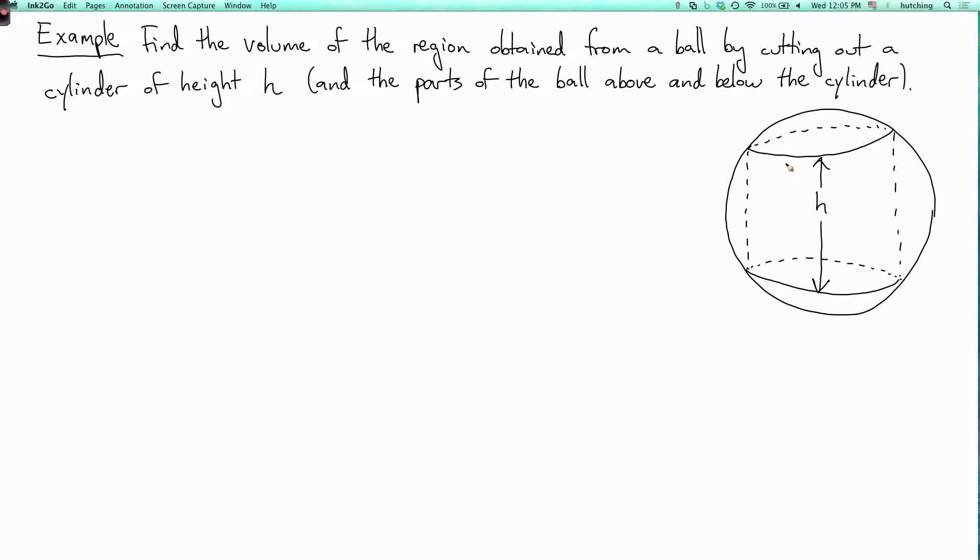Now, the statement of the problem might look a little funny because I've only given you the height h of the cylinder and I haven't given you the radius of the cylinder or the radius of the ball. So let's work out the problem and see what happens. We should at least give those numbers names. Let r1 be the radius of the cylinder and let r2 be the radius of the ball.